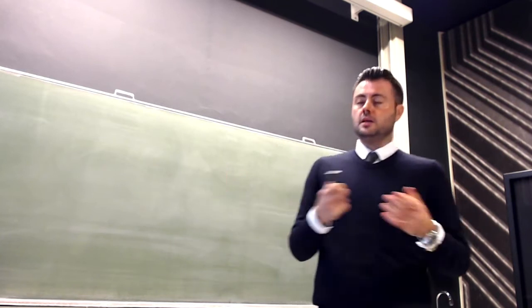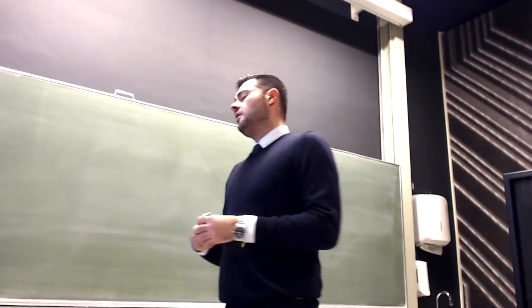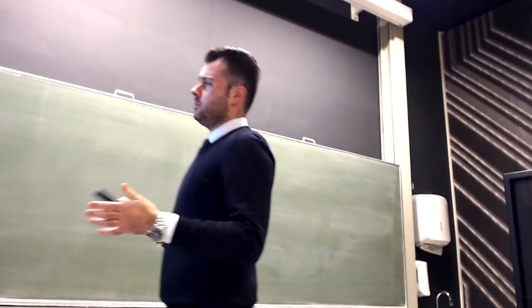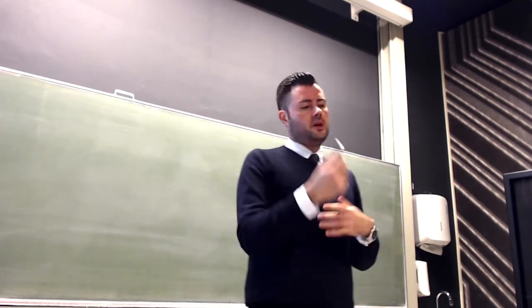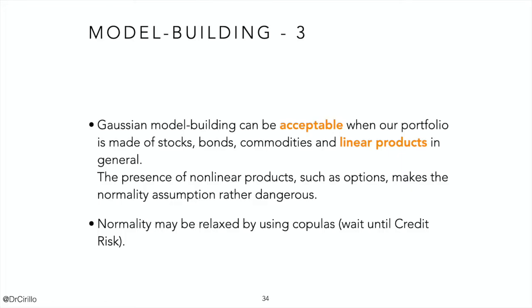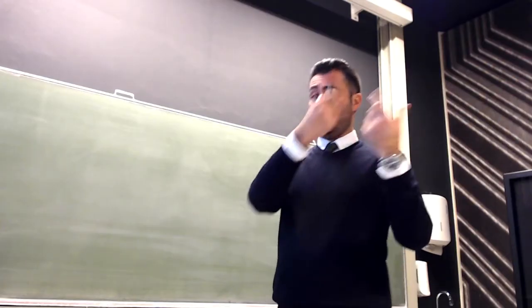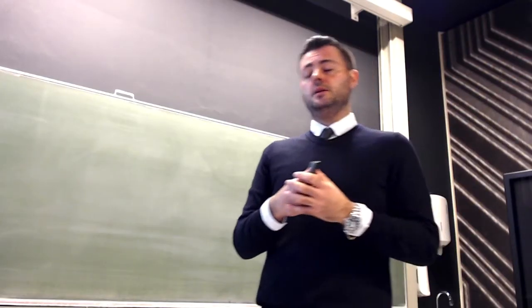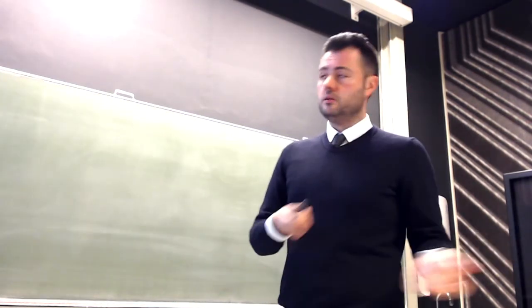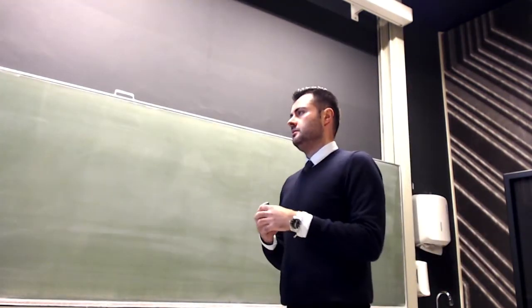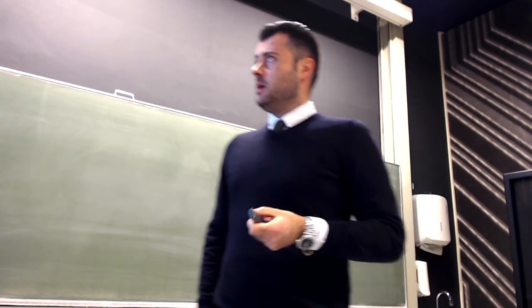Still, normality is used. It can be overcome using different techniques like copulas, but even there it's funny — you move away from the normal assumption, but then you use the Gaussian copula. So you throw away normality out of the door, and it enters from the window. It's always the same.